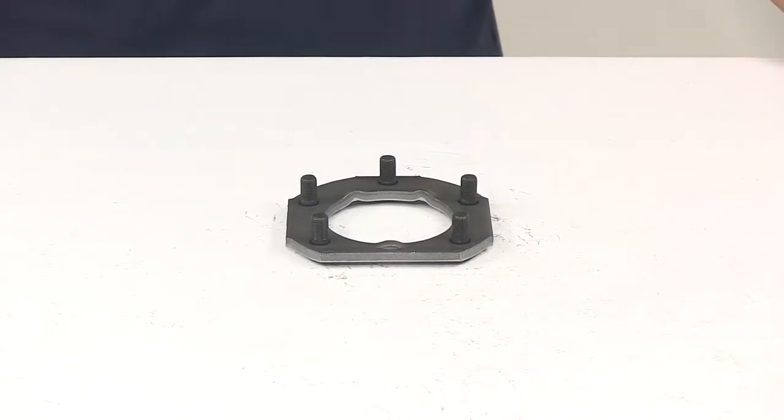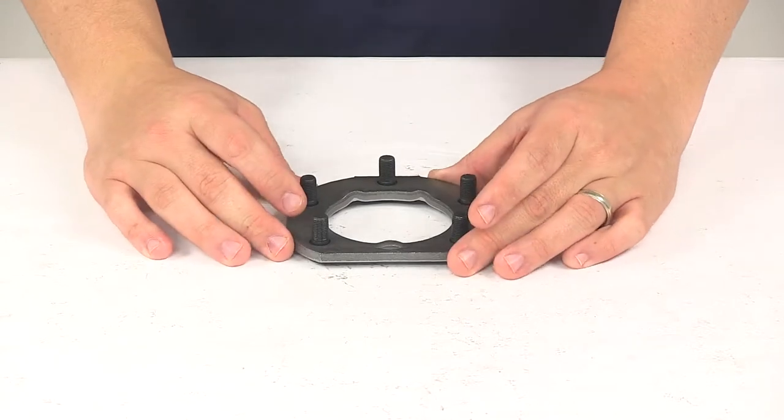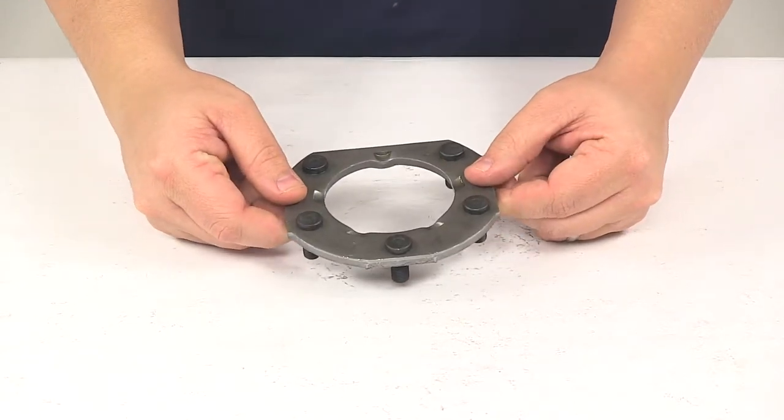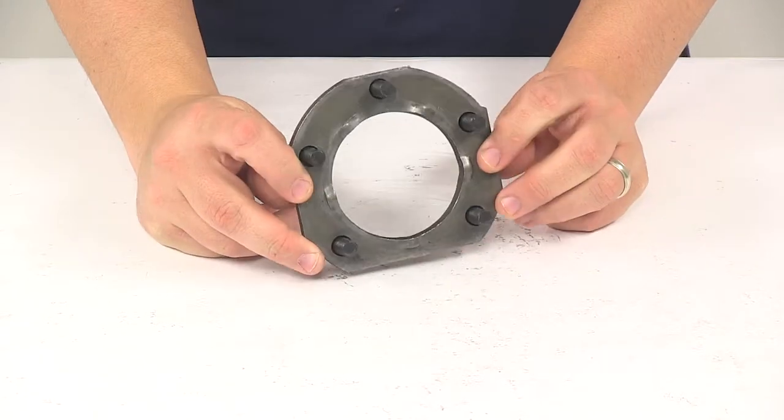Today we're going to be taking a look at a brake mounting flange for a three inch round axle. The brake mounting flange gets welded to the spindle at the end of the axle to provide a secure mounting place for brake assemblies.